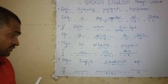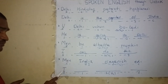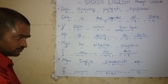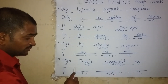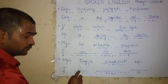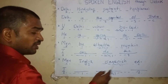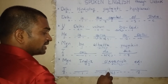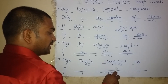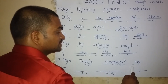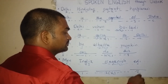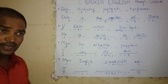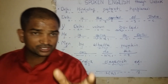Again and again. For example: write 'I,' then 'was' — W-A-S, then 'learning' — L-E-A-R-N-I-N-G, then 'English' — L-I. Pause the video and try yourself. Start.